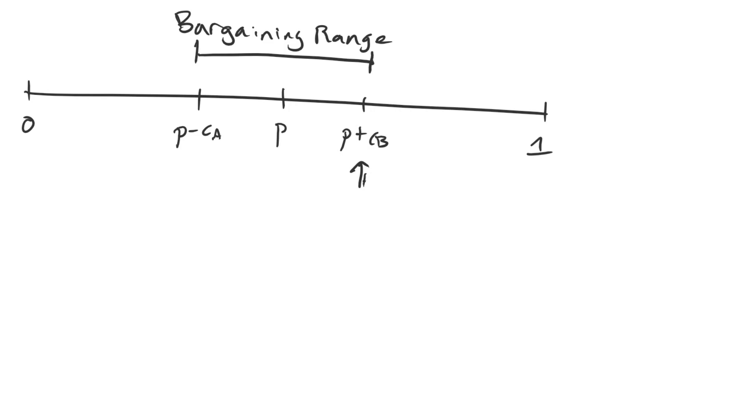B looks at that demand and realizes that's what it's going to be getting from fighting a war. And so it is perfectly happy to accept that deal. Which works out great for A, because A gets to keep everything else.